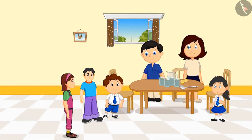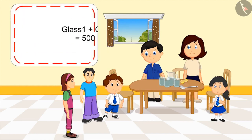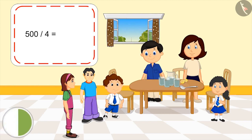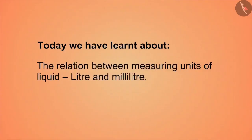Meanwhile, two friends of Pinky arrive. We should give lemonade to our friends too. Why don't we share a part of our lemonade with them? In total, we have two glasses of lemonade, so how much lemonade will we all get? We have 500 ml of lemonade — you mean half a litre? Yes, let's divide 500 by 4. Kids, you can pause the video and think about the answer. We all will have 125 ml of lemonade. Wow, Pinky, you solved this too quickly! Today, we have learnt about the relation between measuring units of liquid: litre and milliliter.